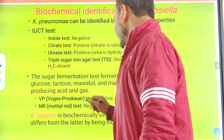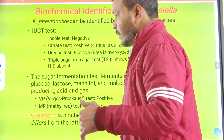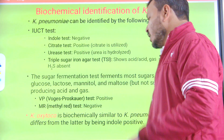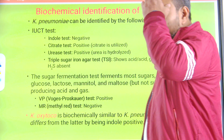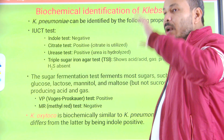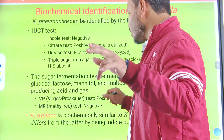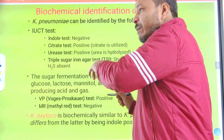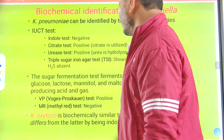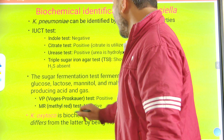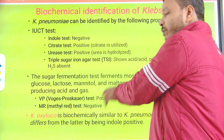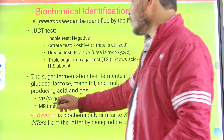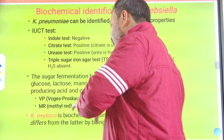In the Voges-Proskauer test, Klebsiella is VP positive. Most organisms show an inverse relationship: if VP positive, they will be MR negative; if VP negative, they will be MR positive. Klebsiella pneumoniae is VP positive and MR (Methyl Red) negative.